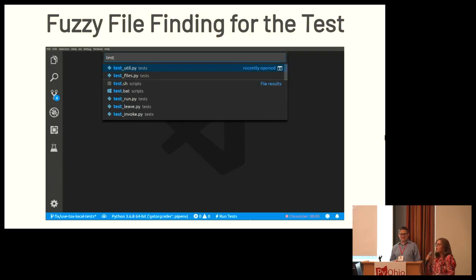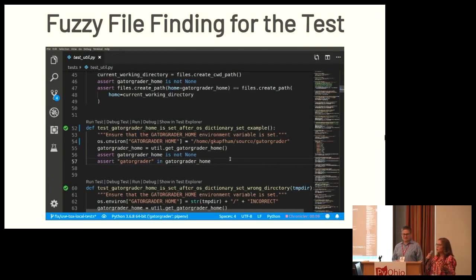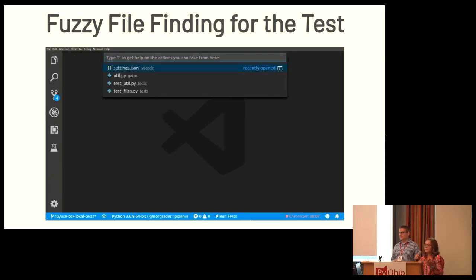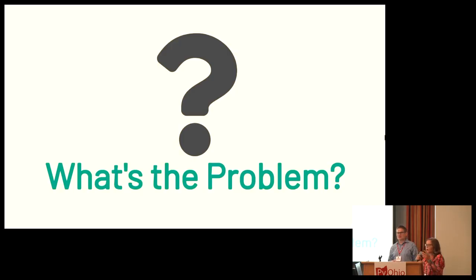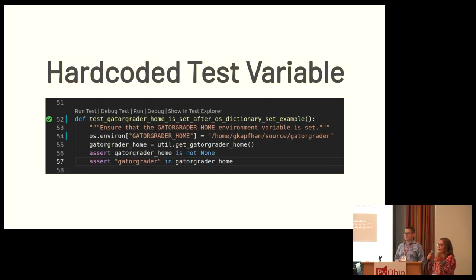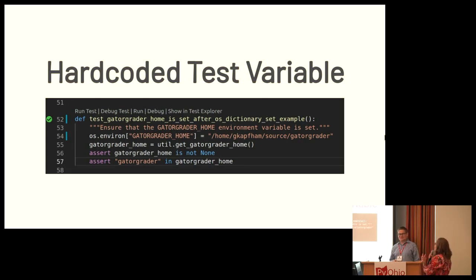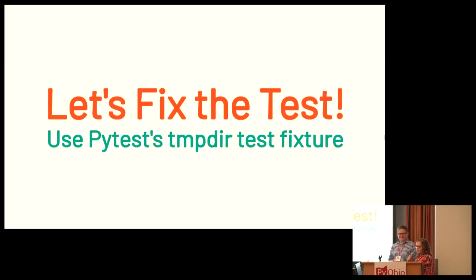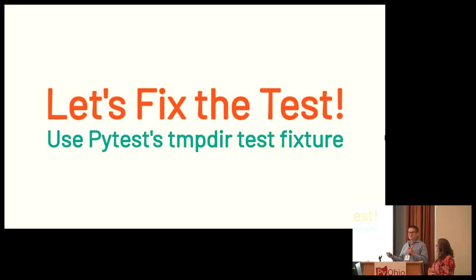The next step was fuzzy file finding. We went to the test that had 98% coverage. Fuzzy file finding in VS Code is done with Control-NP, and you can type in any test you're interested in. After scrolling through lines of code and inspecting test cases, we found a hard-coded test variable — GatorGreater Home was set to the directory of my father's computer, which is why I was getting 98% coverage.